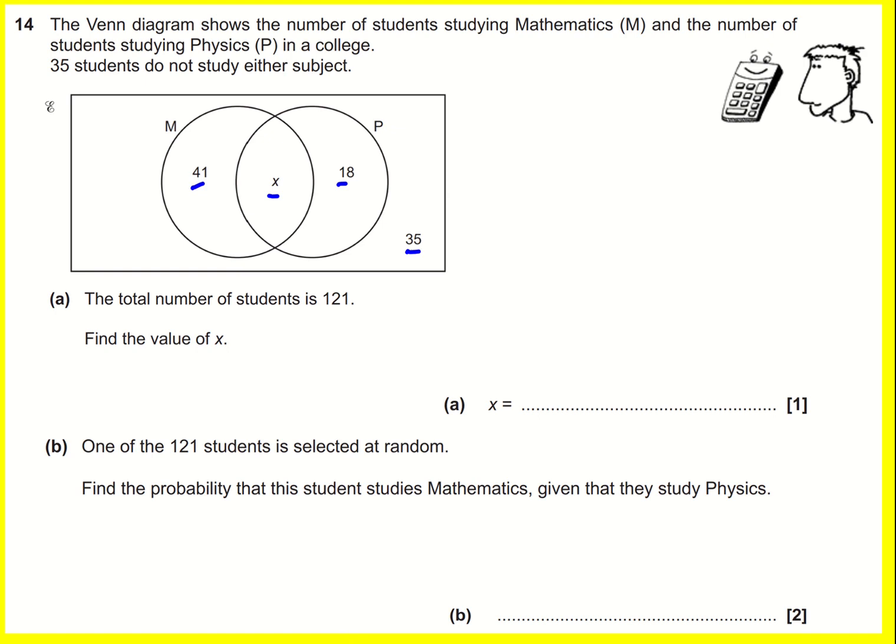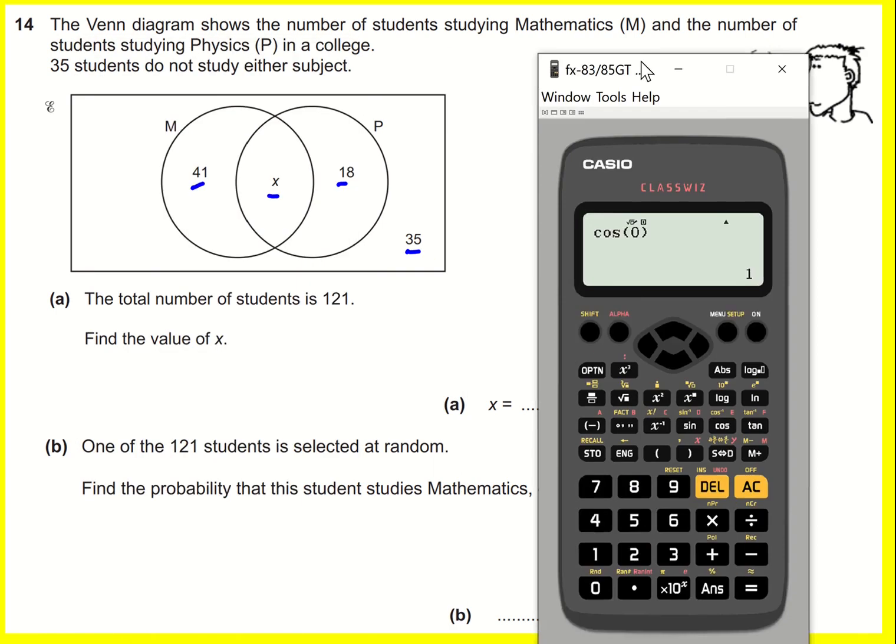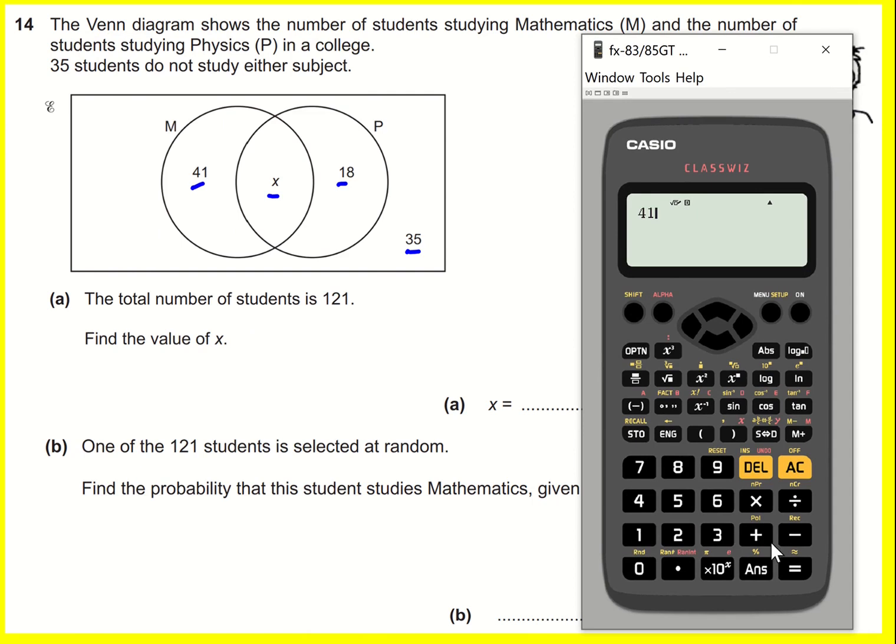It's a one marker. I don't think I need to write an equation, but along the lines of what I've just said, I think it's absolutely fine to just add these up and solve it as we go. 41 plus 18 plus 35...